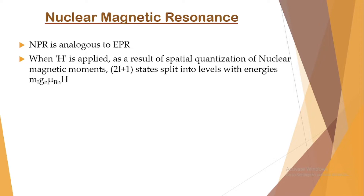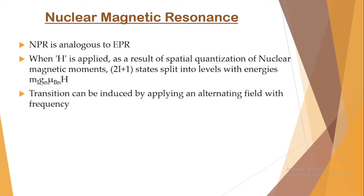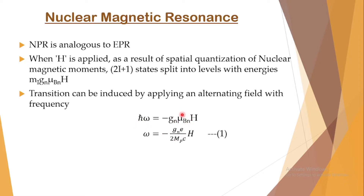Once the states are split into levels we can study transitions, and transitions can be induced between the levels by applying an alternating field with frequency satisfying ℏω = −gN · μBN · H. The angular frequency ω = −gN · (e / 2mP·c) · H. Dividing by ℏ, and noting that the nuclear Bohr magneton μBN = eℏ / (2mP·c), where mP is the mass of the proton — this is equation number one.